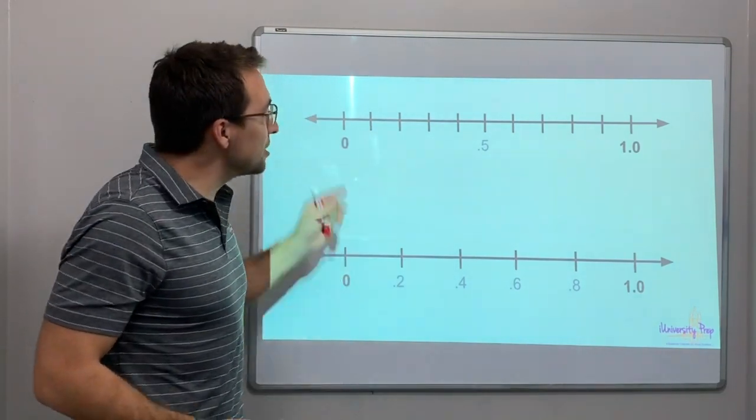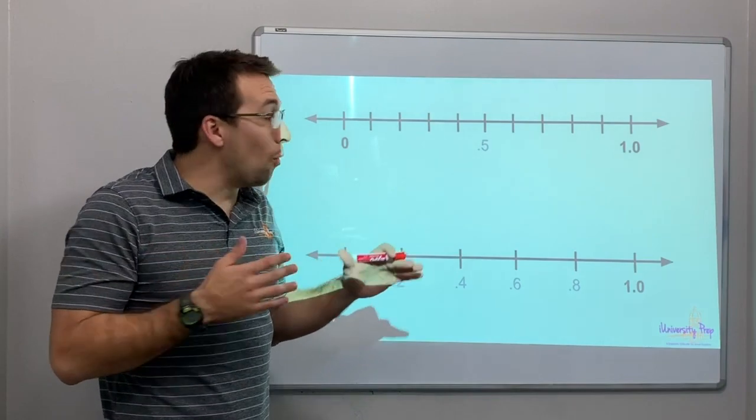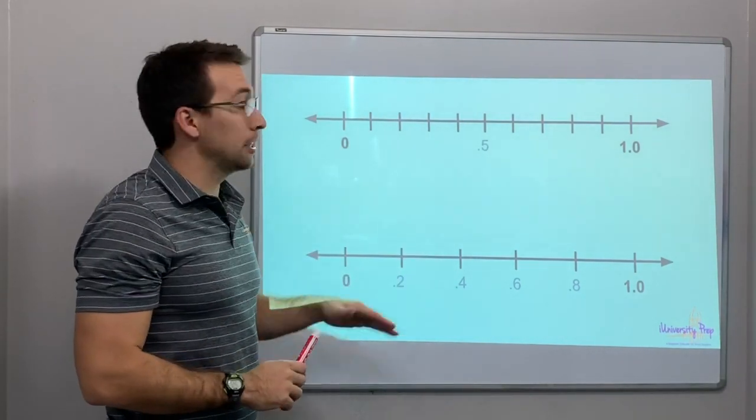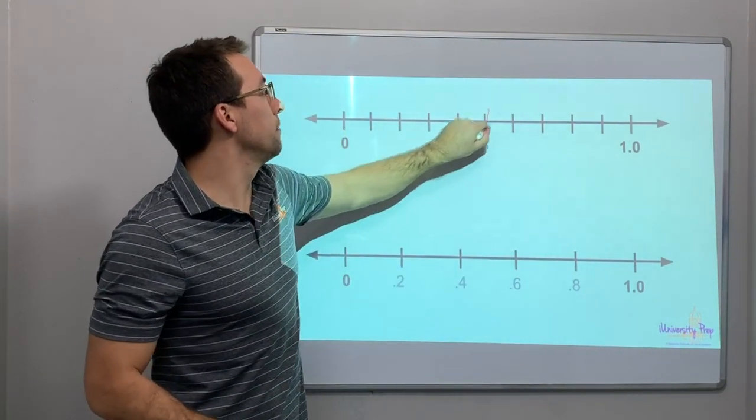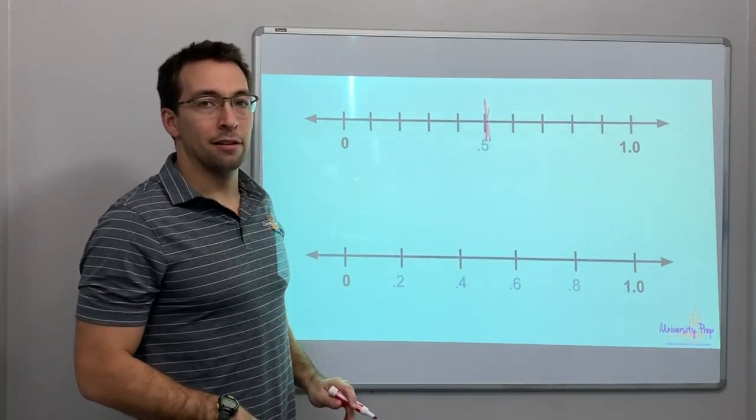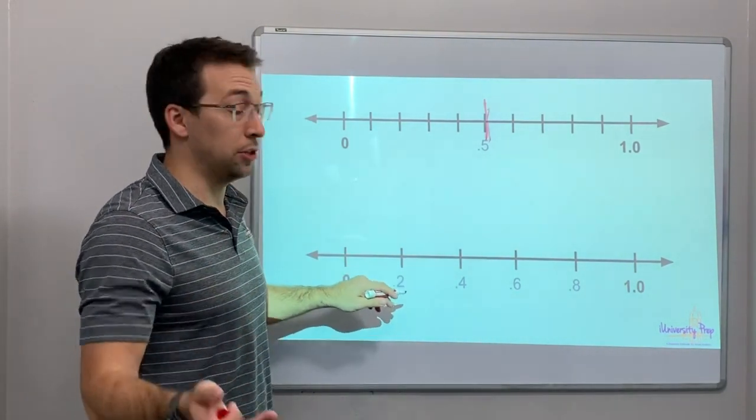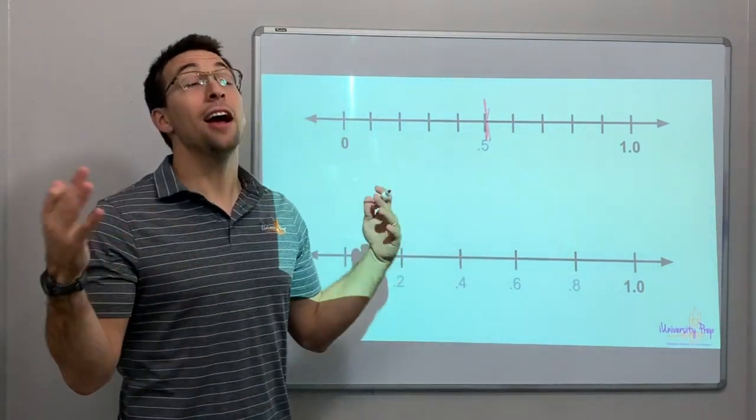Not only, again, as long as we have even increments, you can have whatever kind of division or breakdown you want on your number line. Check this out. 0 to 1. And I'm only showing the 0.5. Look, here we jump by increases of 0.2: 0, 2, 4, 6, 8, 10.